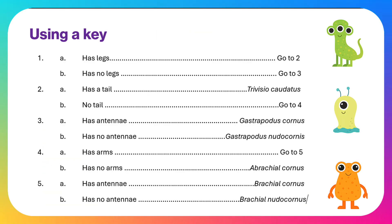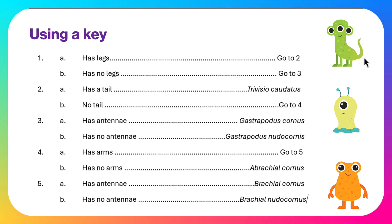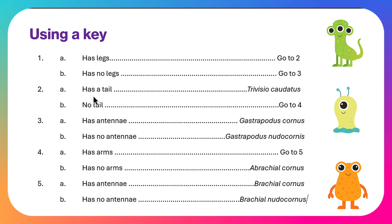Let's have a look at an example of a key. This is one I've made using made-up aliens. Looking at the first one, we follow the key: the first question is 'has legs or has no legs?' — this one has legs, so we go to two: 'has a tail or no tail?' — it has a tail, so that gives us the name of this creature. That was an easy one.